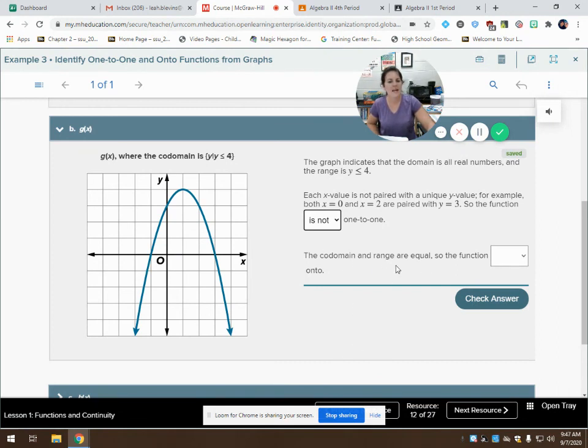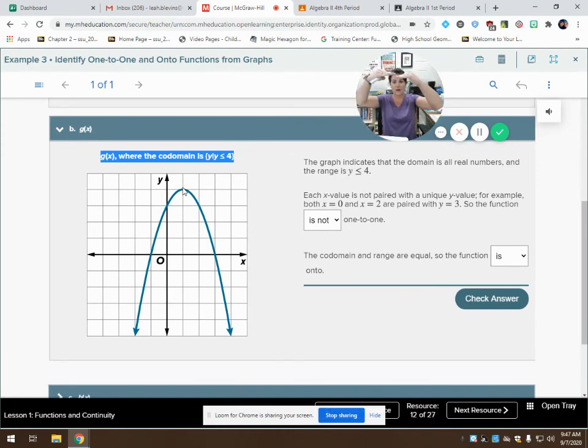The codomain and the range are equal. So, therefore, the function is onto, because it's specified up here that my codomain is y values less than or equal to 4. We can tell that my range starts here at that 4, and it goes down forever and ever and ever. So, it's less than or equal to 4. Since they're the same, it is onto.